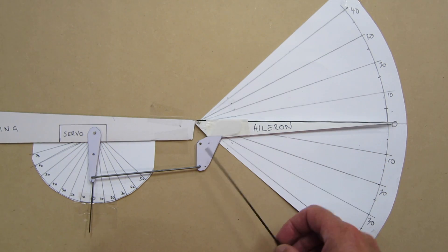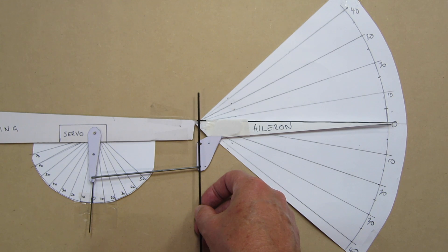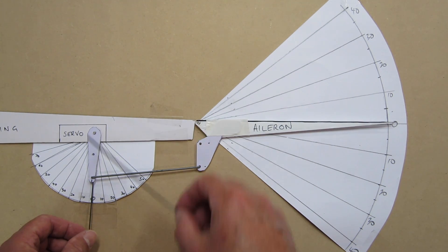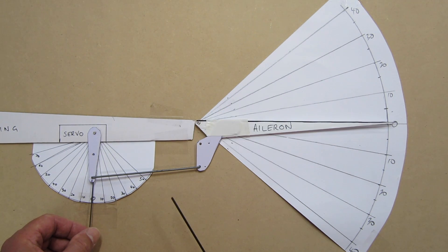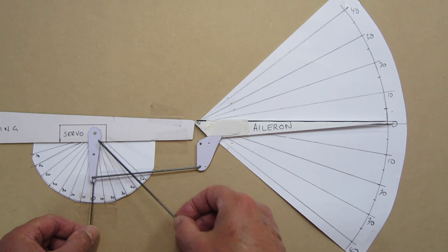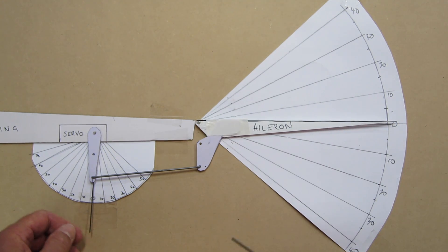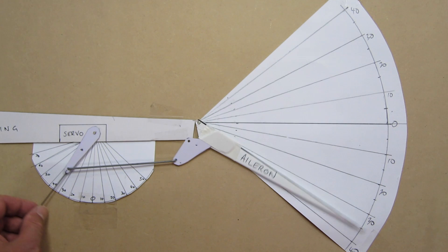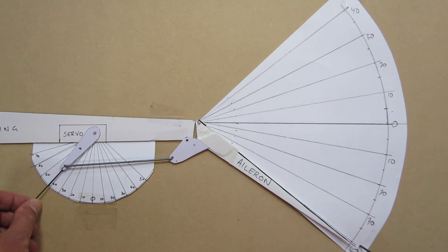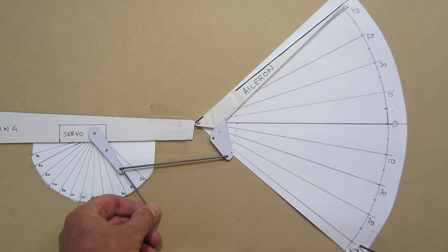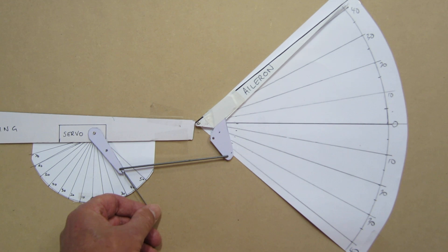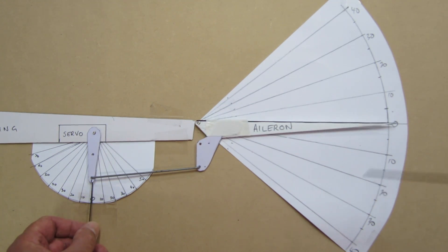With this setup, I have the control horn holes lined up with the hinge line. The servo arm is vertical. The push rod is connected 50mm out from the servo pivot point and 50mm out from the aileron hinge line. So we should get the same angle of deflection. Let's go out to 40 degrees, and yes, we get 40 degrees down of the aileron. 40 degrees the other way, and we get 40 degrees up for the aileron. So that's equal deflection either side.